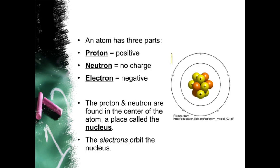An atom has three parts. Proton equals positive. Neutron equals no charge. Electron equals negative. The proton and neutron are found in the center of the atom, a place called the nucleus. The electrons orbit the nucleus.